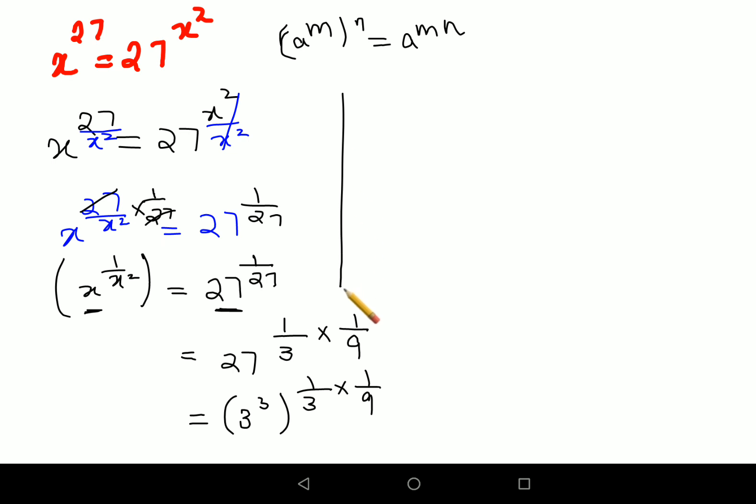Here your LHS is x raised to 1 upon x square is equal to 3. The indexes will get multiplied: 3 raised to 3 into 1 upon 3 into 1 upon 9. This 3 and this 3 is canceling. Now this looks like x raised to 1 upon x square, and this is 3 raised to 1 upon 9 which can be written as 3 square. From here I can deduce that value of x is nothing but just 3.